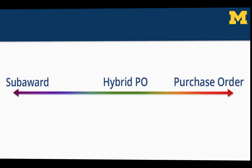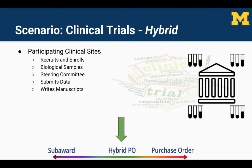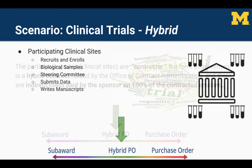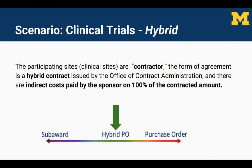Now let's add 10 participating sites to the study that will implement the same protocol — recruiting and enrolling study subjects in accordance with the established protocol written by Michigan and Utah, drawing blood samples, participating on the steering committee, submitting data to the Data Coordinating Center, and providing input and assisting with the preparation of manuscripts. The participating sites are contractors. The form of agreement is a hybrid contract issued by the Office of Contract Administration, with indirect costs paid by the sponsor on 100% of the contracted amount.